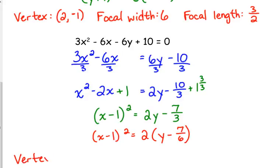So, our vertex is 1, 7 over 6. Both of those are positive because they both have minus signs. Our width is 2. Our length, factoring a GCF is dividing. Dividing by 2 is the same as multiplying by 1 half. The focal length would be 1 half. We divide the width by 4. Every single time.